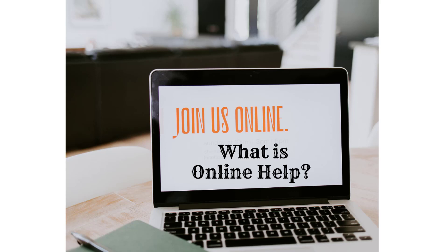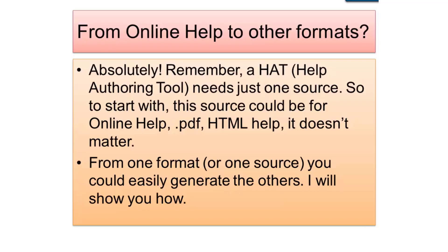To create a help file using Help and Manual, we basically create a help project file. For instance, if our output deliverable is online help, then we create an online help project file in Help and Manual. If we require a compiled HTML output file, then our project in Help and Manual should be a compiled HTML project file.